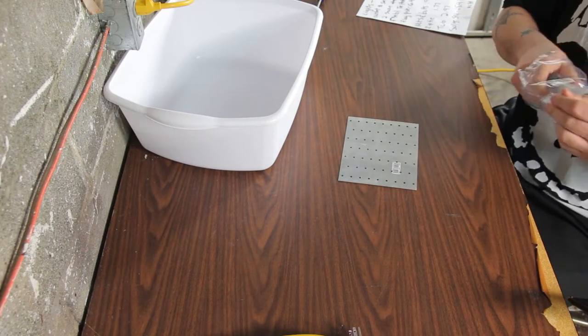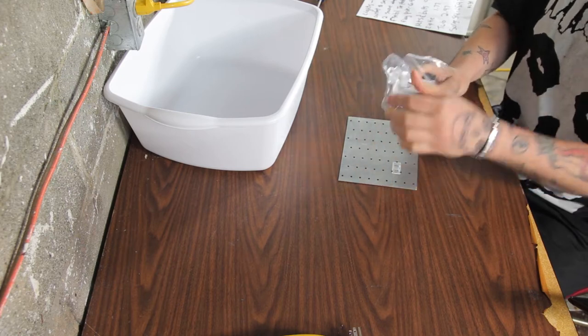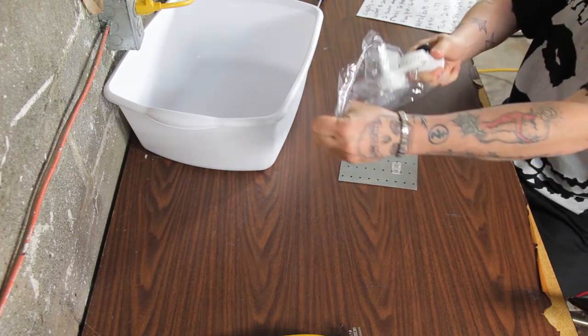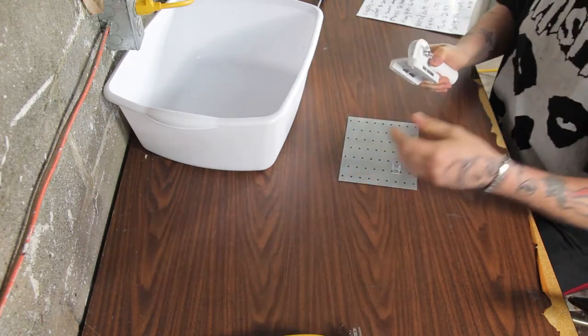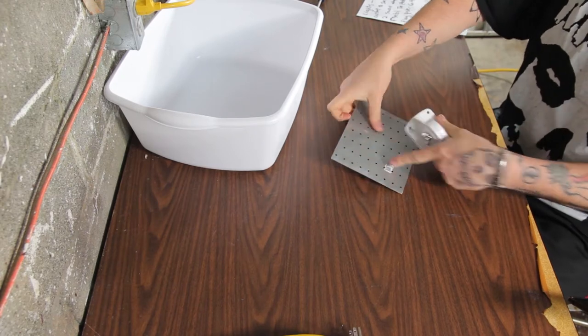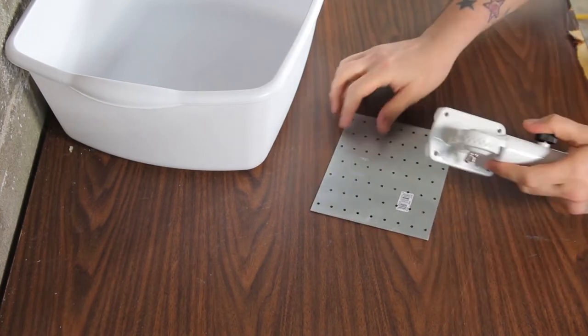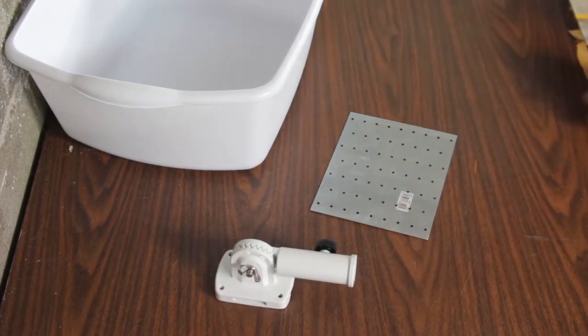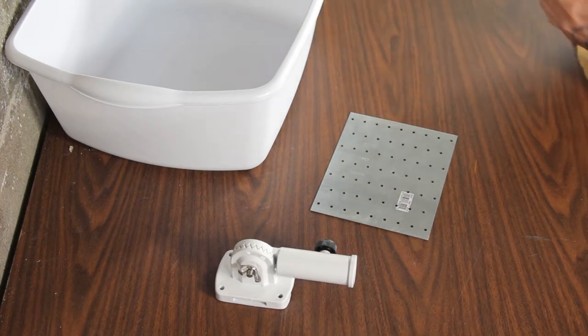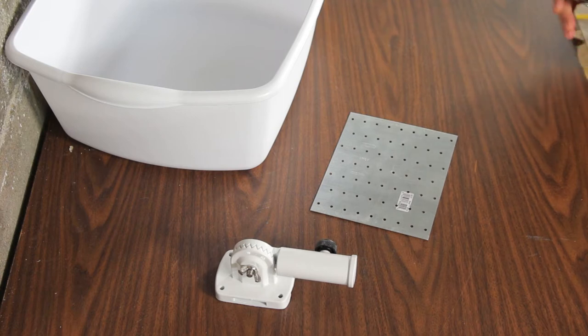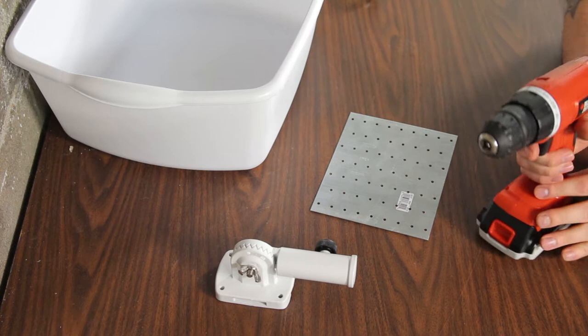So let's just get into this build. Take your flagpole holder. We're going to need to drill out some of these holes on this plate so that the bolts will fit. I've got some random tools for this project. I've got a couple of screwdrivers, some tin snips, which you could use scissors for, an adjustable wrench, and a drill.